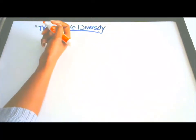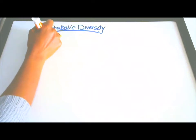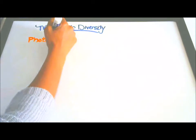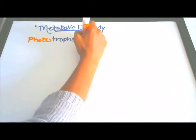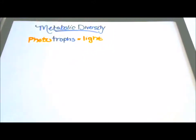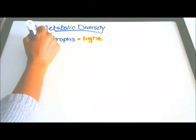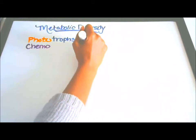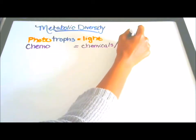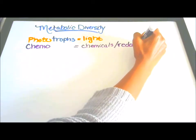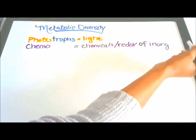Among organisms, there are metabolic diversities, and they are classified by their energy source. Here we have phototrophes — photo meaning light, they feed on light. Next we have chemotrophes, and they feed on chemicals through redox reactions of inorganic or organic compounds.